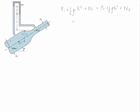We're going to write the continuity equation between points 1 and 2. We assume the fluid is incompressible, so we relate velocity at point 1 to velocity at point 2 by the ratio of the areas. We then substitute this relationship into Bernoulli's equation to get an expression for the difference in pressures.